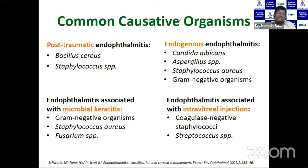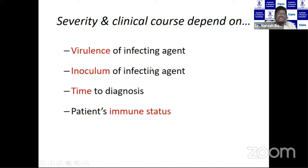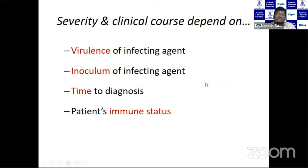In post-traumatic endophthalmitis, Bacillus should be kept in mind. In endogenous endophthalmitis, it can be fungal. The severity and clinical course will depend on the virulence of the infecting organism — the more the virulence, the more severe the inflammation. The amount of inoculum, the time of diagnosis, and the patient's immune status also play a huge role.